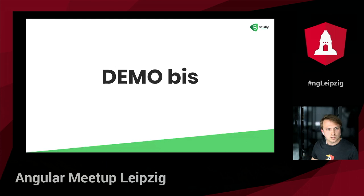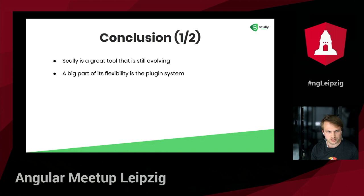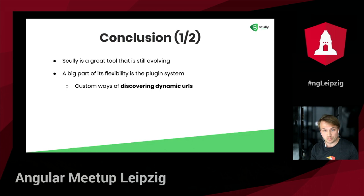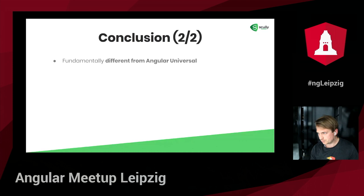To conclude: Scully is a great tool that is still evolving — it hasn't even officially released its first version yet, so it's in developer preview, but it's definitely ready to use. We might expect some smaller and bigger updates in the future. A big part of its flexibility is the plugin system: it allows you to define custom ways of discovering routes, do post-rendering and transformations on the HTML output, and process different kinds of text formats using file handler plugins. You can also do additional cleanup or other work using the all done plugin type.